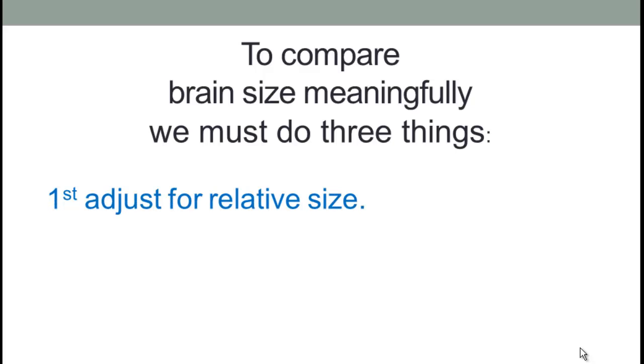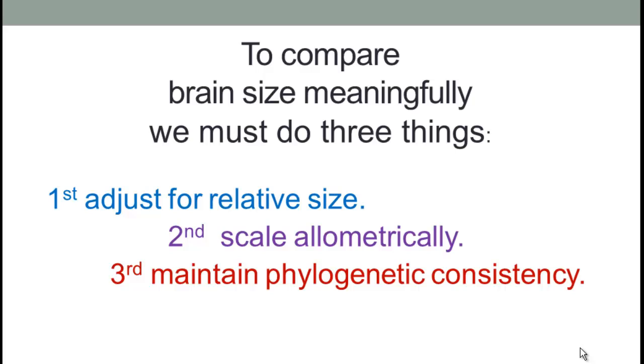First we have to adjust for relative size, but that's not enough. Secondly, we have to scale allometrically. And third, we have to maintain phylogenetic consistency. So we're going to explain each of these three things.